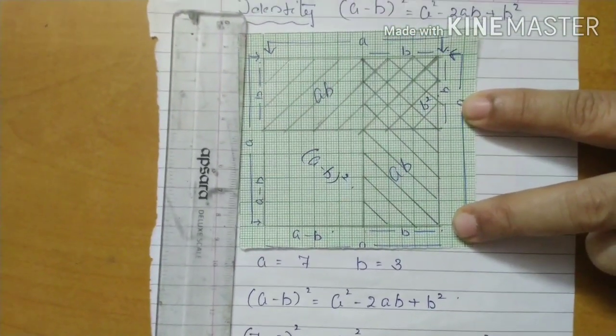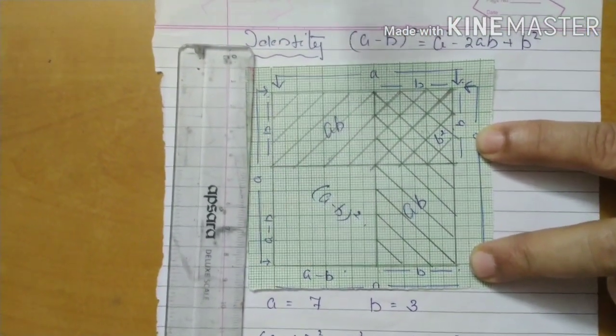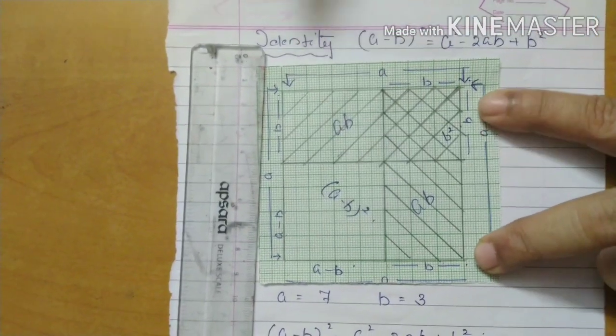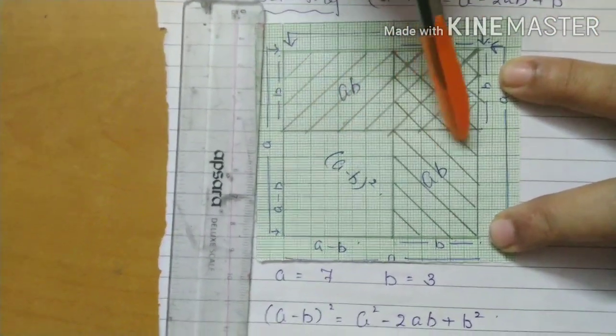It is (A minus B) the whole square, so A is 7. Now here B I took 3 units, so from here 1, 2, 3.